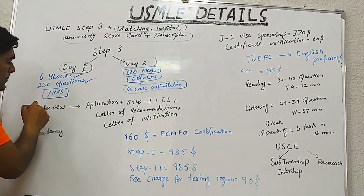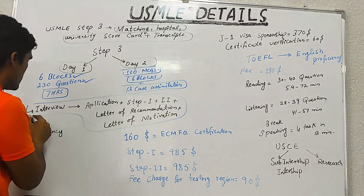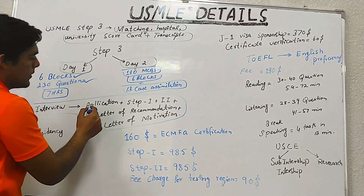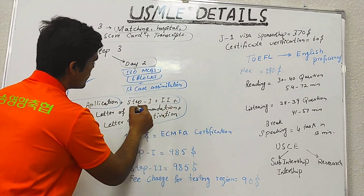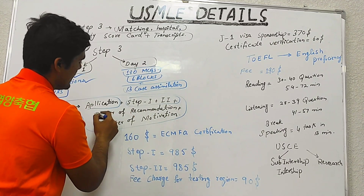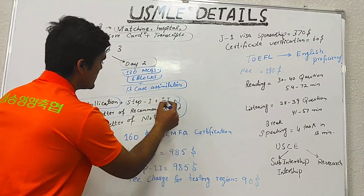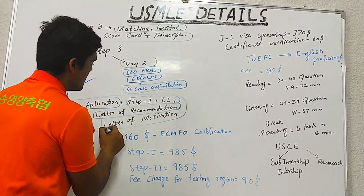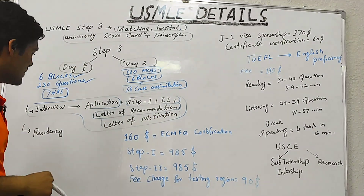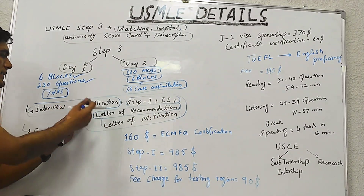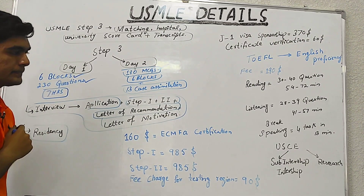After completion of Step 3, there is an interview for which you need your application, passing scores for Step 1 and Step 2, a letter of recommendation from a doctor in the United States, and a letter of motivation written by the student. After passing this, you apply for residency.